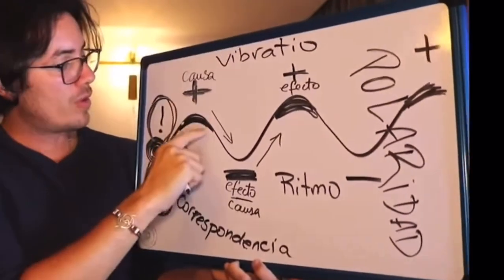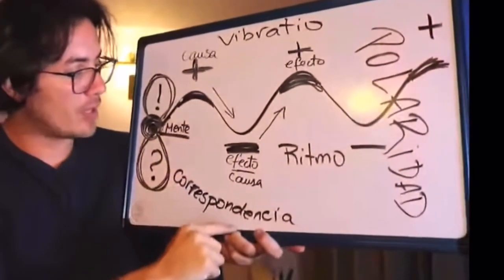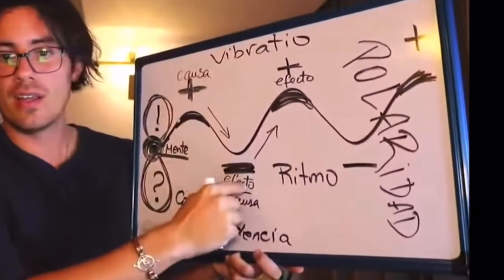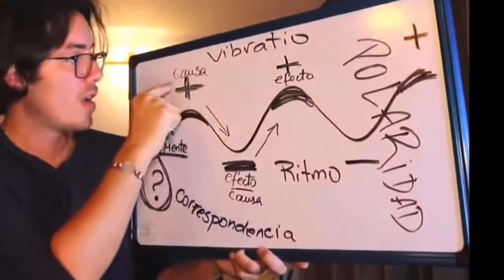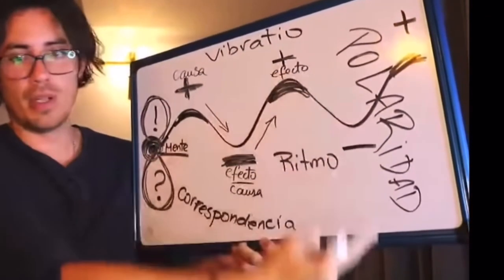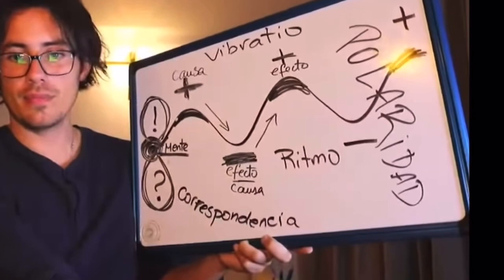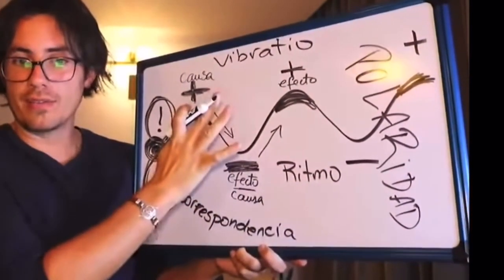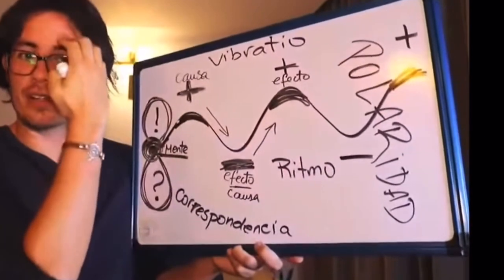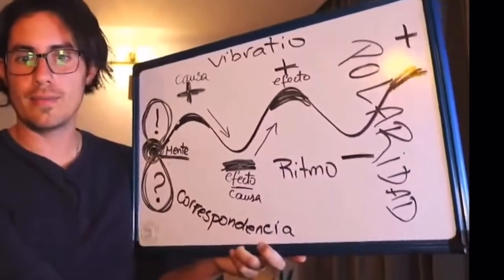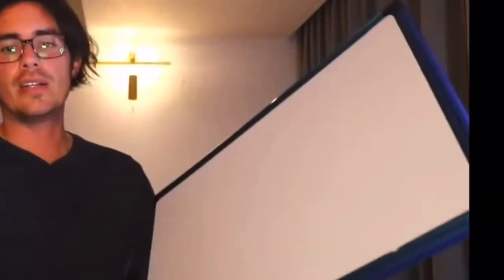Why? Due to what do we have correspondence, rhythm, vibration, and cause and effect? It's because of polarity. Polarity. So nothing that you have here would exist without the concept of polarity.